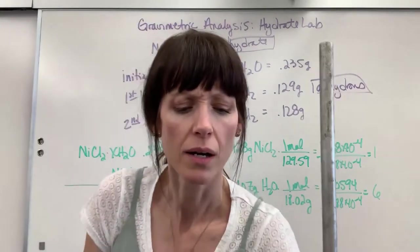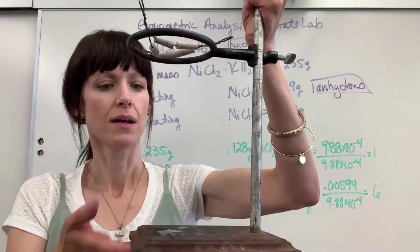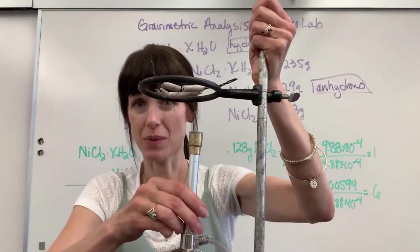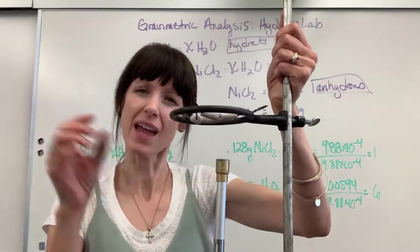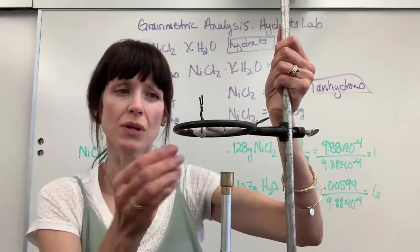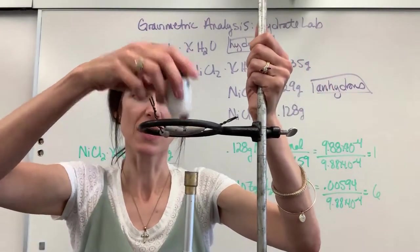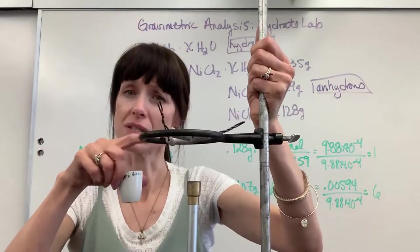Now on your ring stand here, you're going to have a Bunsen burner. And you want the apex of the inner blue flame to hit the bottom of your crucible. So in essence, to meet the bottom of this ring stand.